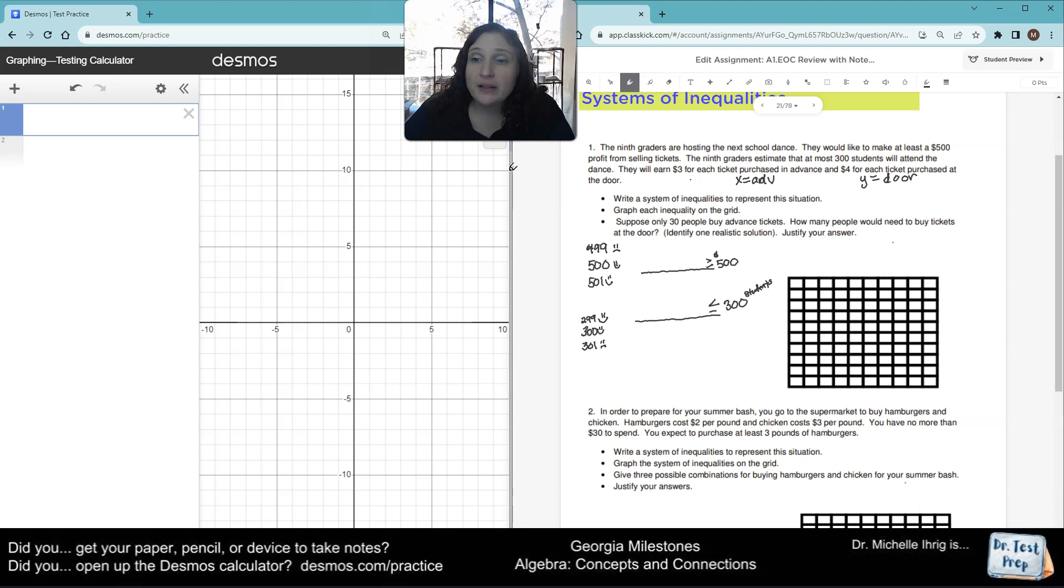So $3 for each advance ticket, that's just 3X, plus $4 for each Y ticket. And I'm putting it with the $500 because it costs money. $3, $4, $500, that's why it goes on that line.